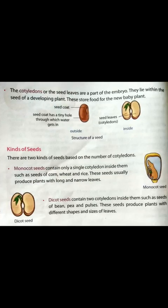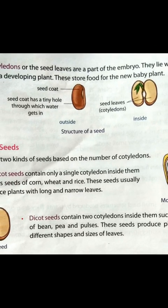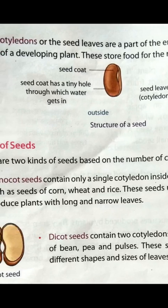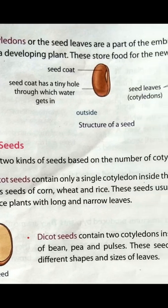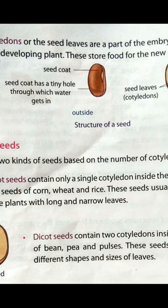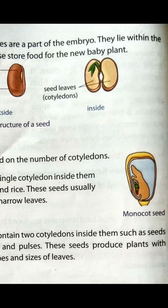Now look at the picture on page 52. The seed coat is brown in color and has tiny holes. Inside the seed it is divided into two parts: seed leaves — meaning cotyledons — and the small plant inside, which is the seedling.